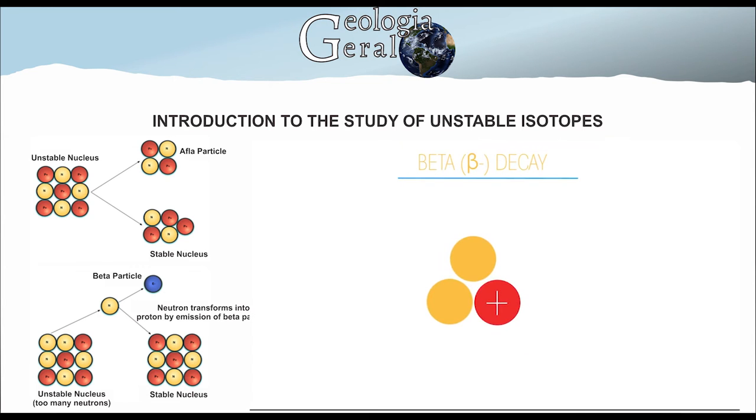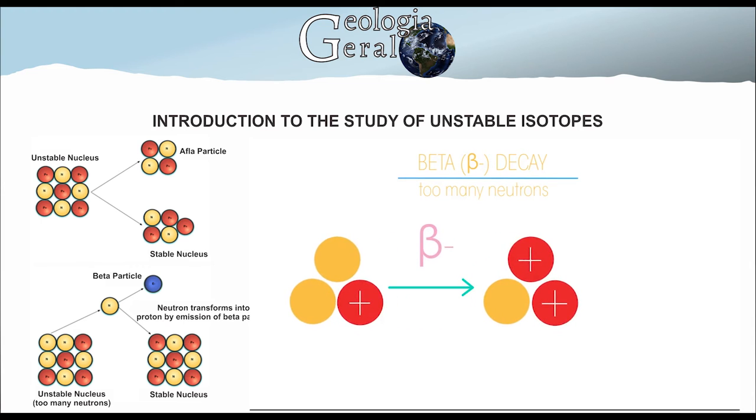The beta particle can be emitted or captured. In the case of emission, it happens due to a breakdown of one neutron into one proton and one electron, and then that electron is released by the element.